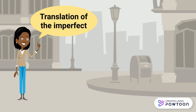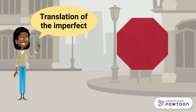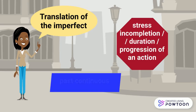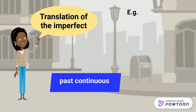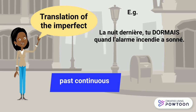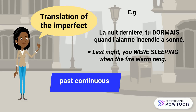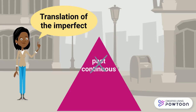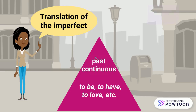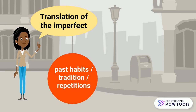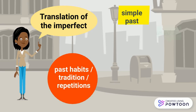Finally, a few words on the translation of the imperfect. In order to stress the incompletion, duration, or progression of an action, use the past continuous, especially in sentences where the imperfect is used with other tenses. For verbs for which the past continuous does not work well — such as to be, to have, to love, and so on — use the simple past. And for past habits, traditions, repetitions, and so on, use the simple past, or 'used to', or 'would'.